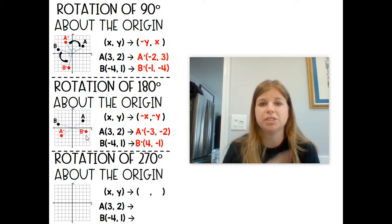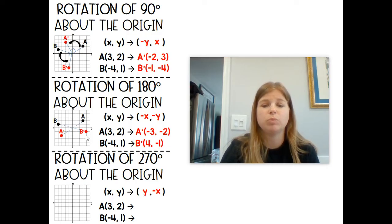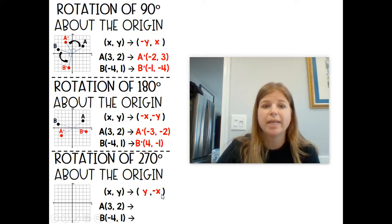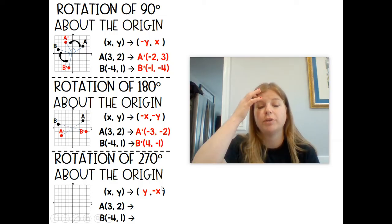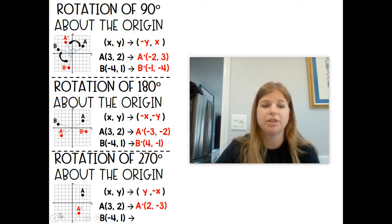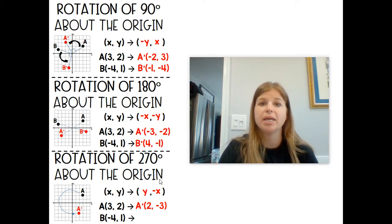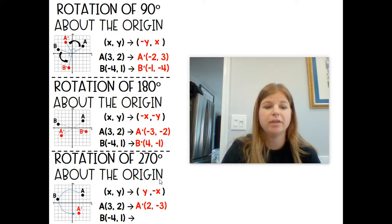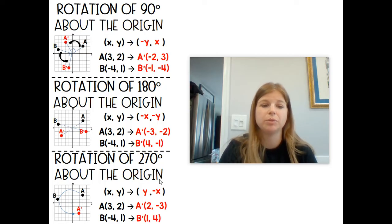A rotation of 270 degrees is three 90-degree rotations, or a 90 and then a 180, however you want to think about it. The rule for 270 is (y, -x). Notice the difference: 90 is (-y, x), and 270 is (y, -x) — the x and y are still flipped, but for 270 the x is negative. If I have point A at (3, 2), A prime ends up in the fourth quadrant. So 90 degrees sent it to the second, 180 to the third, and 270 puts it into the fourth quadrant. Point B at (-4, 1) after a 270-degree rotation ends up three quadrants away in the first quadrant.